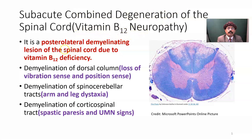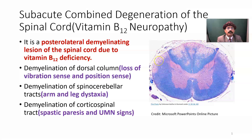What is that? It is a posterolateral demyelinating lesion of the spinal cord due to vitamin B12 deficiency. In the spinal cord, the posterior column will be degenerated and the lateral part will be degenerated. That is the subacute combined degeneration of the spinal cord.